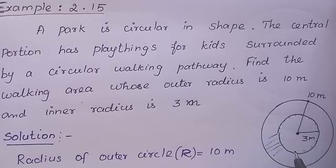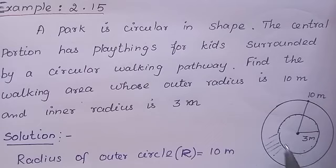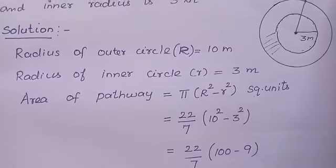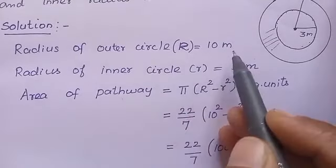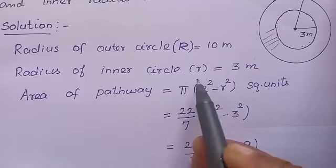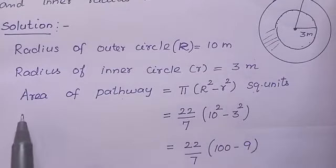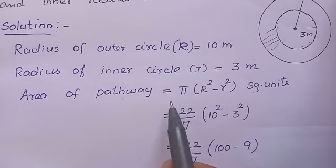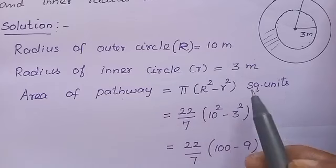The question asks us to find the walking area. What is given: radius of the outer circle, capital R, equals 10 meters; radius of the inner circle, small r, equals 3 meters. We are going to find the walking area using the formula: area of pathway equals π into (R² minus r²) square units.